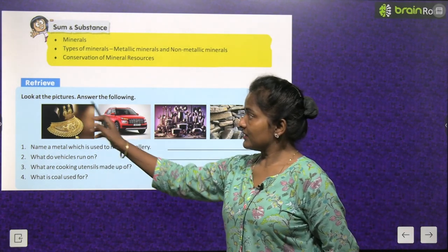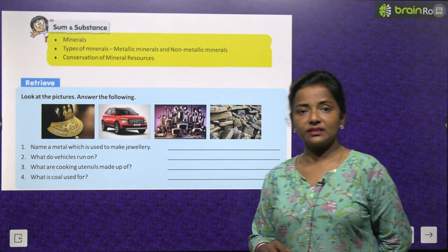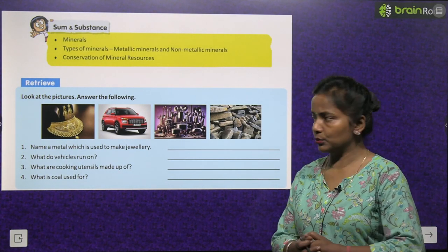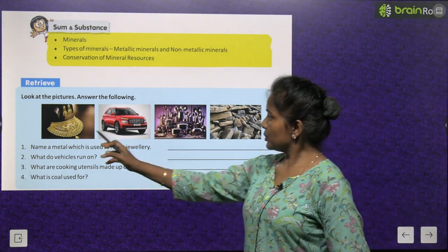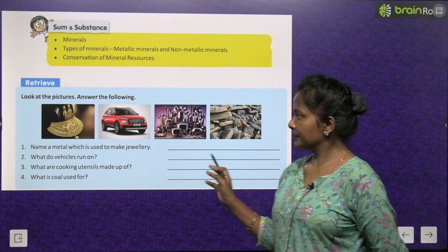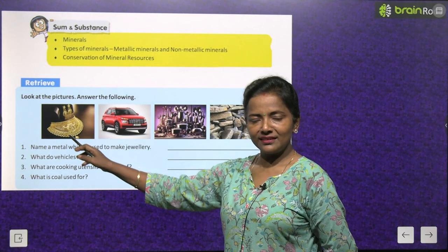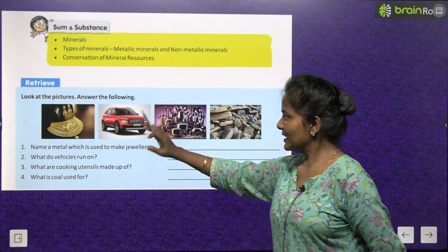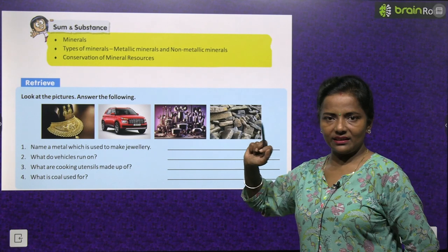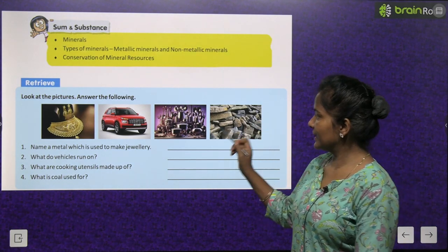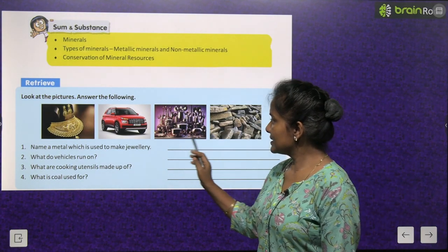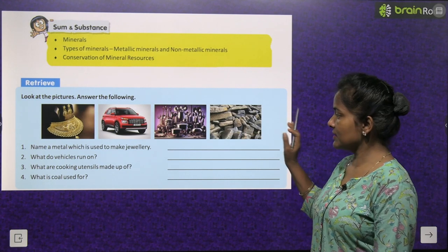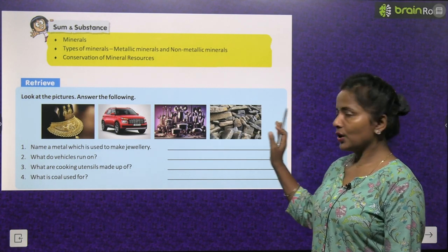Now look at the pictures and answer the following. Some pictures are given here. These are jewelleries. This is a vehicle, a car. Then some utensils are here. And this is coal.